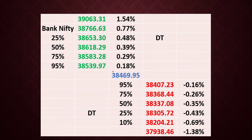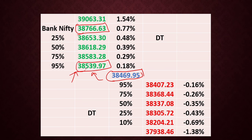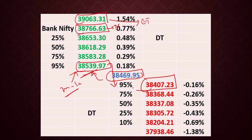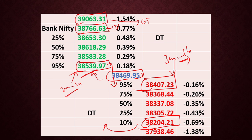Coming to the individual levels, in today's market the Bank Nifty closed at 38469.95. If the market moves up and closes above this level, we can expect a rally up to 38766 — but the market has to sustain above it for at least 30 minutes to 1 hour. We can consider 38766 as our daily target. If the market closes above that, we can expect a further rally up to 39063, which is the extreme target. On the downside, if the market reverses, we can expect a fall to 38407. A close below that targets 38204, which is our daily downside target. A close below 38204 targets the extreme downside level of 37938.